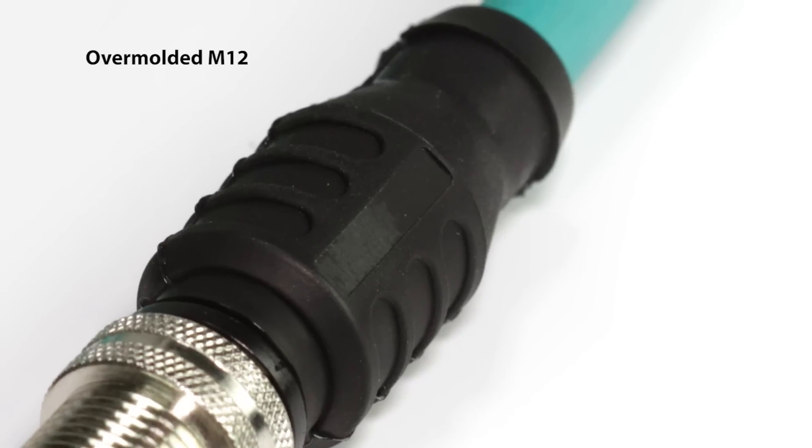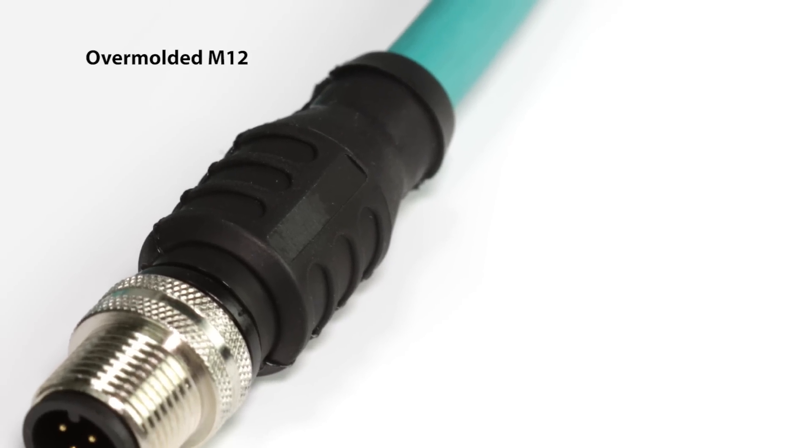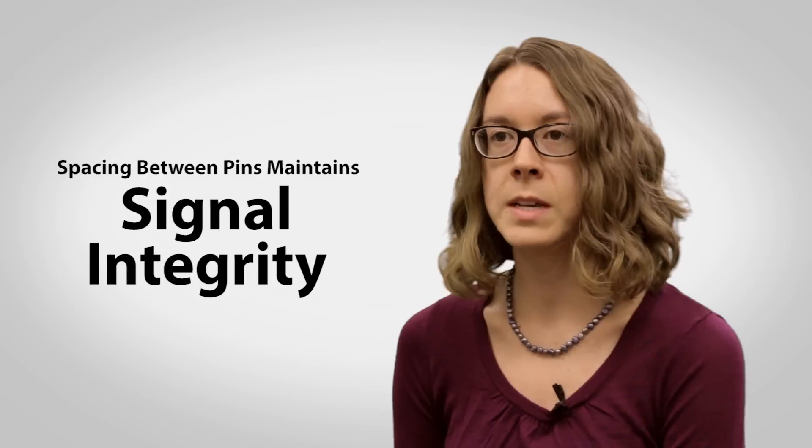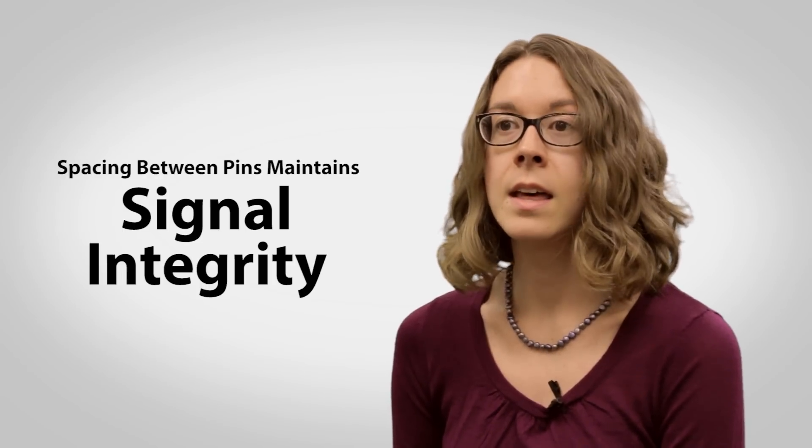An overmolded M12 is used for industrial ethernet because it is considerably more robust and rugged than the RJ45. And the spacing between pins maintains signal integrity. This is what makes it ideal for the factory floor.